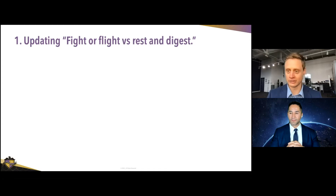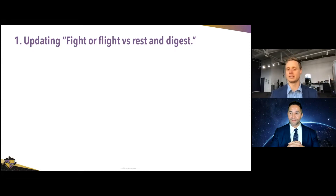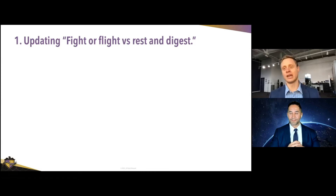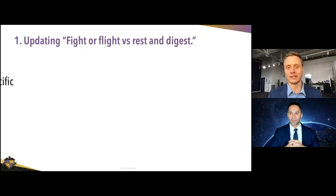If you search autonomic systems on Google, you'll come up with gobs of articles describing the sympathetic system as doing fight-or-flight things and the parasympathetic system doing rest-and-digest things. That's brilliant from a popular science standpoint if you're communicating a simple concept, but in terms of autonomic dysfunction and dysautonomia — things we're really trying to help people with — it's not an adequate description.